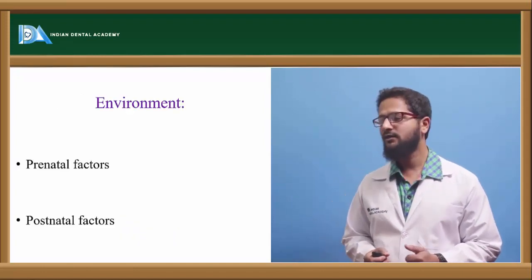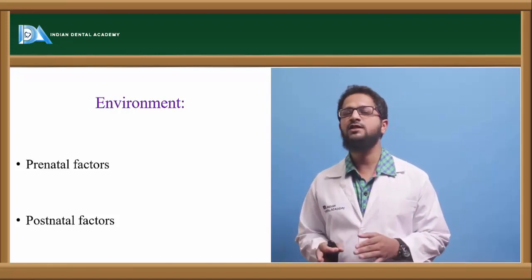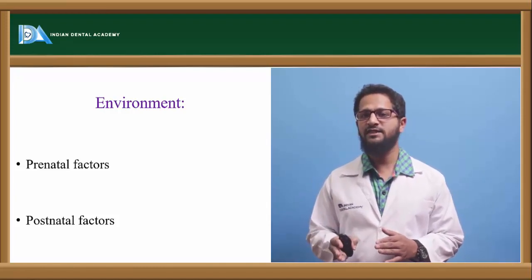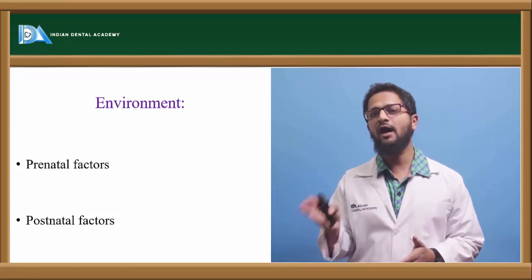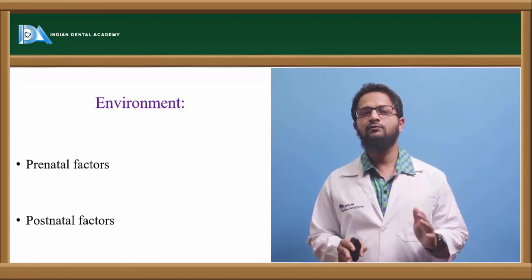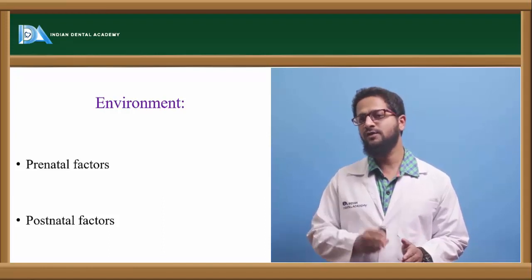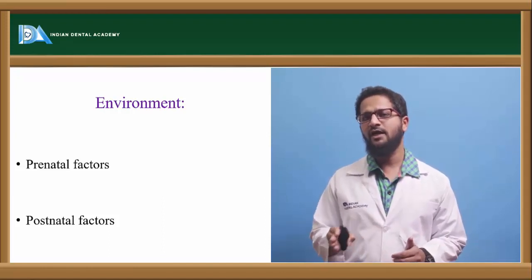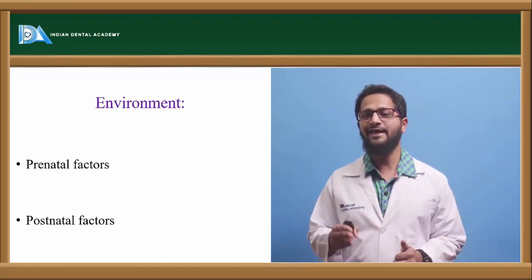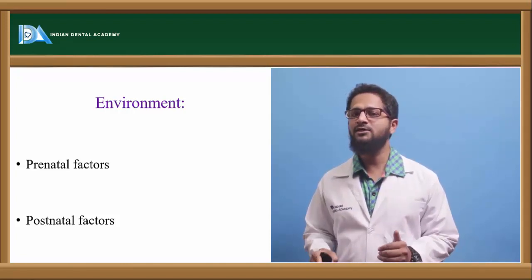Environment relates to two categories: prenatal factors and postnatal factors. Prenatal factors are responsible for causing malocclusion before birth, and postnatal factors after birth. Prenatal factors are associated with the mother — most commonly abnormal pressure acting on the fetus. Malocclusion from such pressure is usually self-correcting. However, conditions like amniotic lesions or maternal fibroids usually cause permanent damage to the developing fetus.